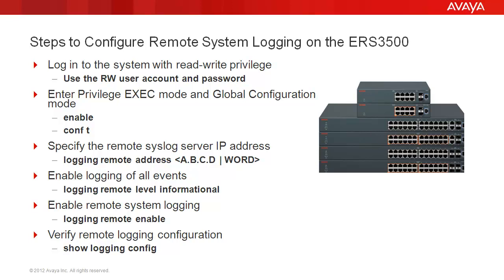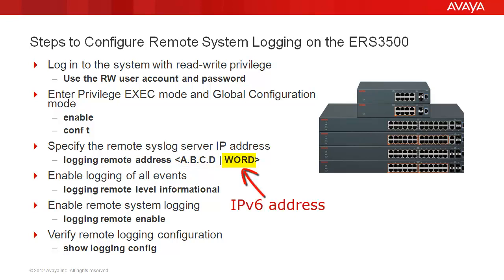We'll go through these steps to configure remote system logging on the EOS 3500. First, we log into the system with the rewrite privilege using the rw user account and password. Then we enter the privilege exec mode and the global configuration mode using commands enable, then conf t. To specify the remote syslog server IP address, we'll use the command logging remote address followed by the IP address, which can be an IPv4 address or IPv6 address.